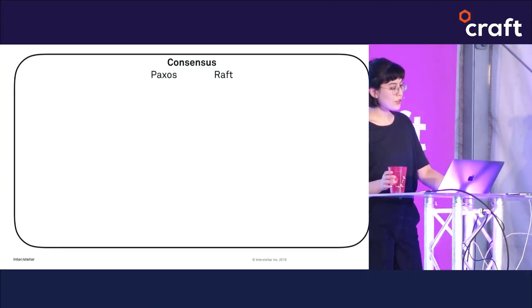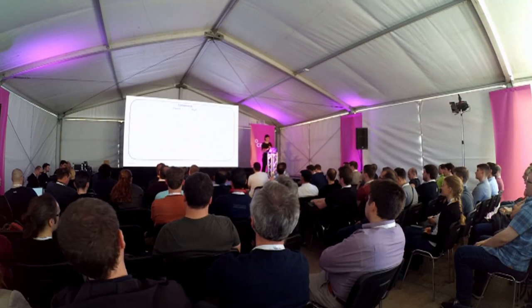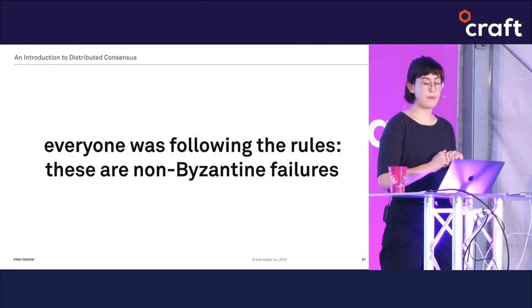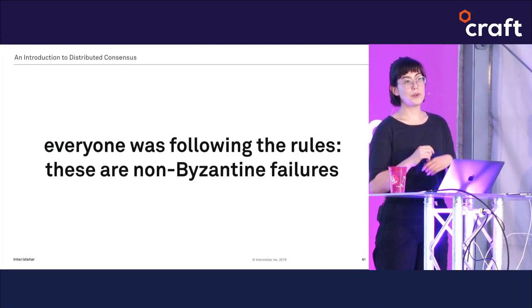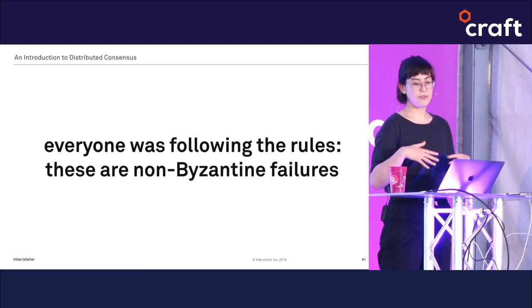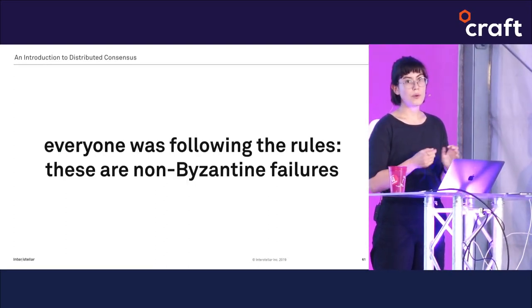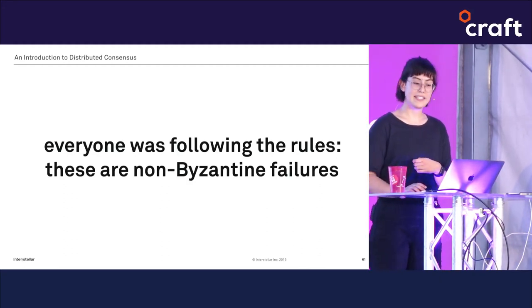This is a good time to step back and look at our little universe of consensus algorithms. We have the consensus problem and two solutions: Paxos and Raft. But you might have noticed that both Paxos and Raft rely on every participant following the rules — for example, proposers in Paxos never send out accept statements for ballots they haven't prepared, and voters in Raft never vote twice in the same term. A failure where nodes stop following the rules and start behaving maliciously is called a Byzantine failure.